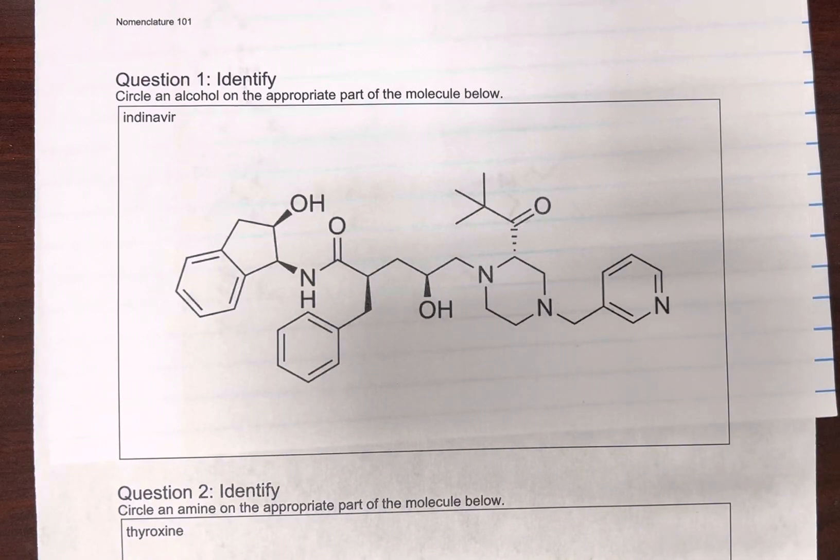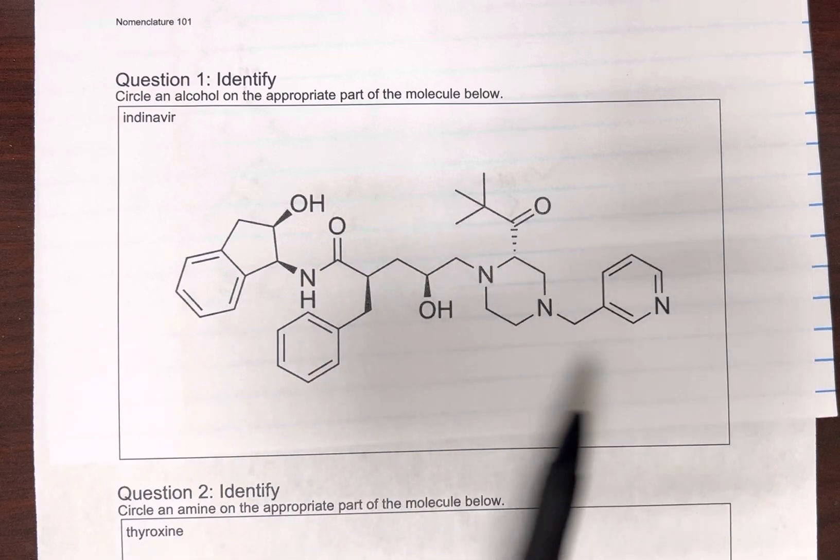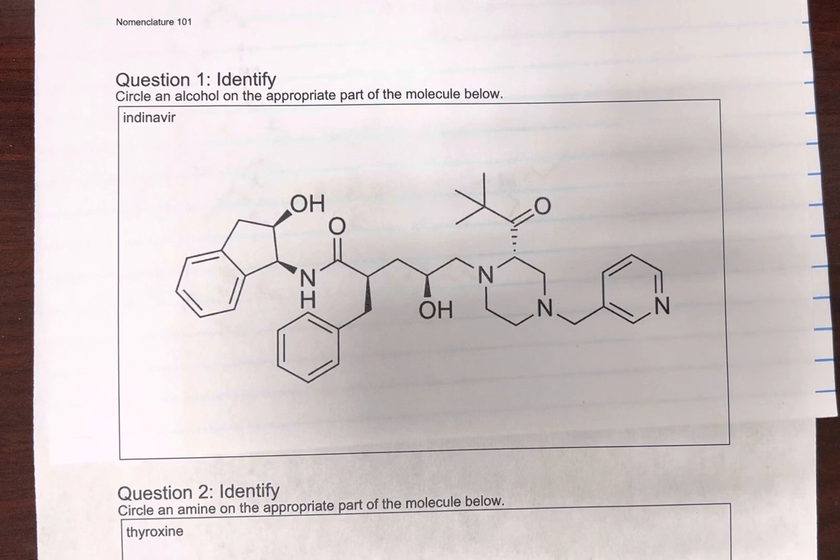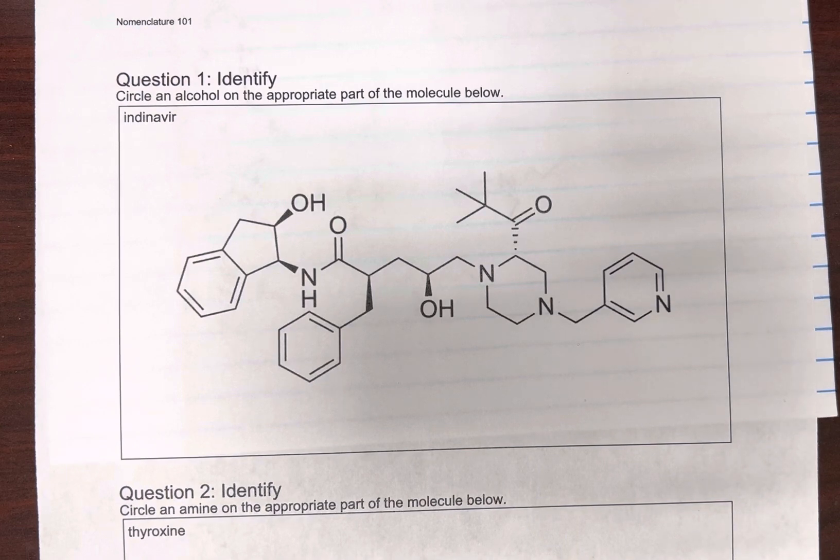So today we're going to be practicing identifying our single bond functional groups. As you can see, this is a really complex molecule and there are some things that we don't know quite how to name yet. So I just want to go through and first of all, I'll use my pencil and circle the things that hopefully, if you have your list of functional groups that we've gone over so far, let's circle what we can identify.